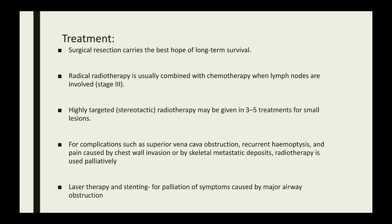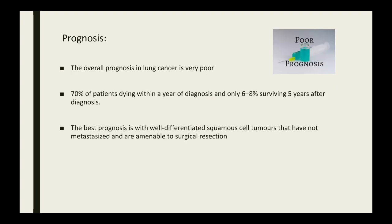Coming to the treatment, surgical resection carries the best hope of long-term survival. Radical radiotherapy is usually combined with chemotherapy when lymph nodes are involved. Highly targeted radiotherapy may be given in 3 to 5 treatments for small lesions. For complications such as superior vena cava obstruction, recurrent hemoptysis, and pain caused by chest wall invasion or skeletal metastatic deposits, radiotherapy can be used palliatively. Laser therapy and stenting are used to temporarily relieve obstruction. The prognosis of lung carcinoma is very poor — 70% of patients die within a year of diagnosis, and only 6-8% survive 5 years. The best prognosis is seen with well-differentiated squamous cell tumors that have not metastasized.